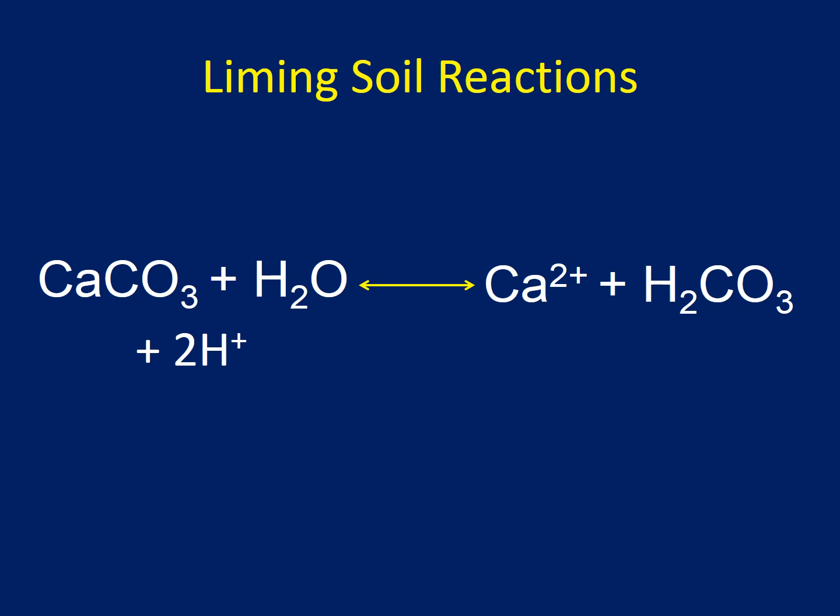So this is the soil liming reaction. We've got calcium carbonate, which is the most common lime that we use. That's on the left-hand side, and then that reacts with water and it becomes soluble within the soil. It breaks up into its two species, which are a calcium cation and a carbonate species that reacts with the acidity in the soil, and that helps to neutralize it and increase the pH.